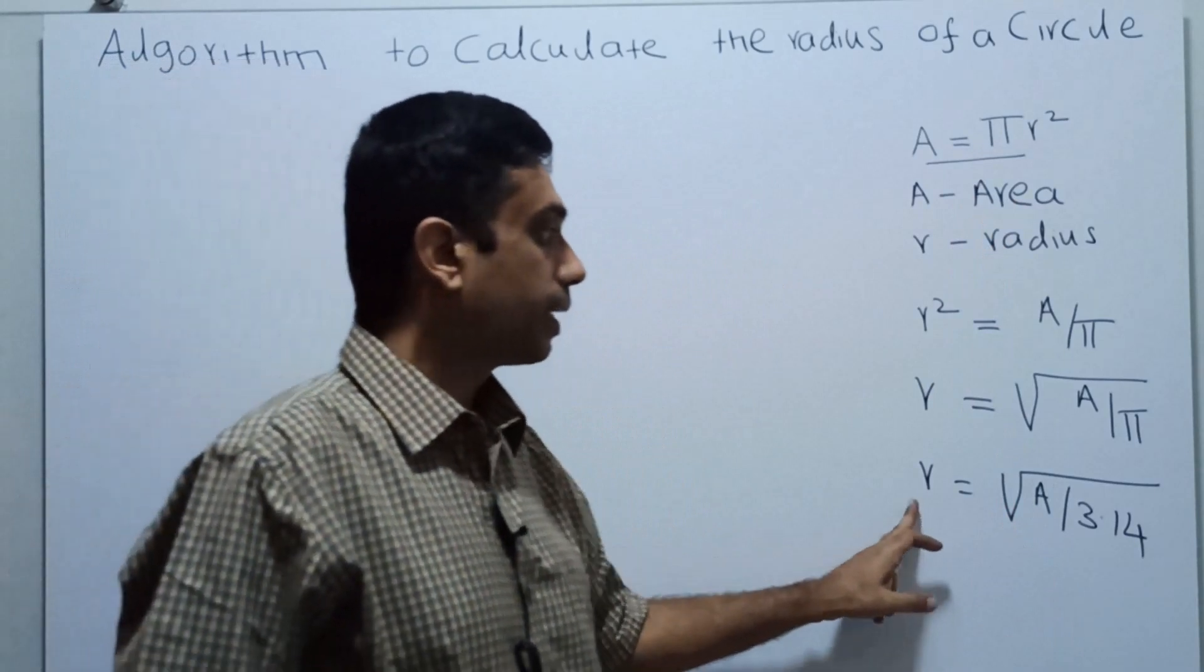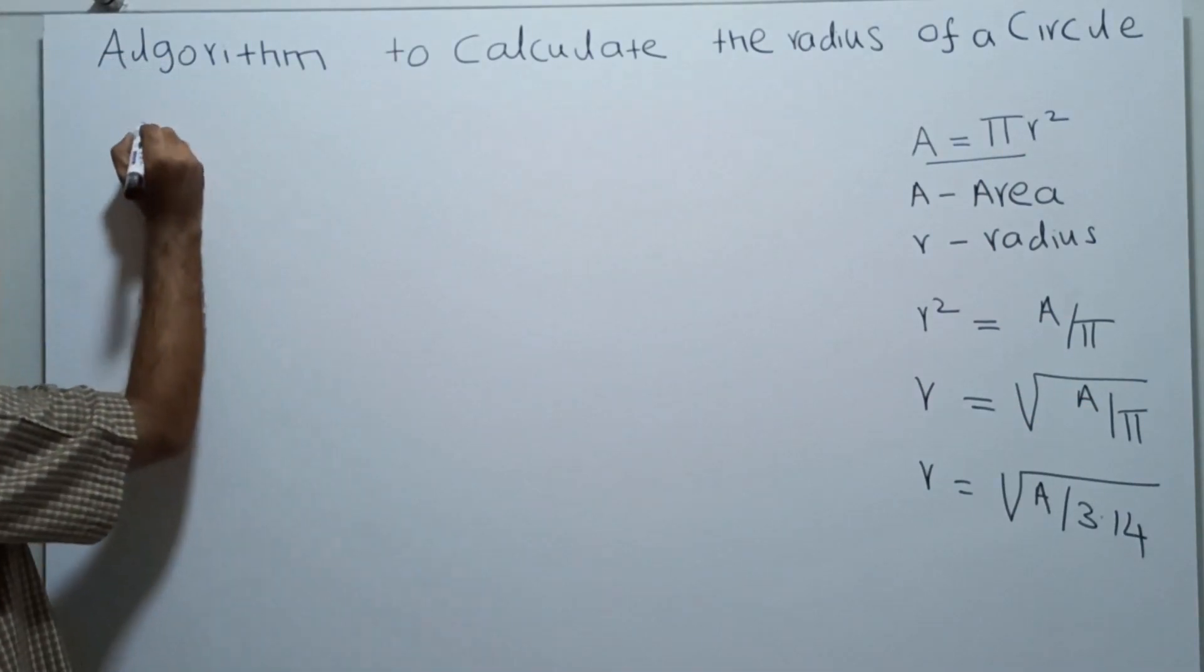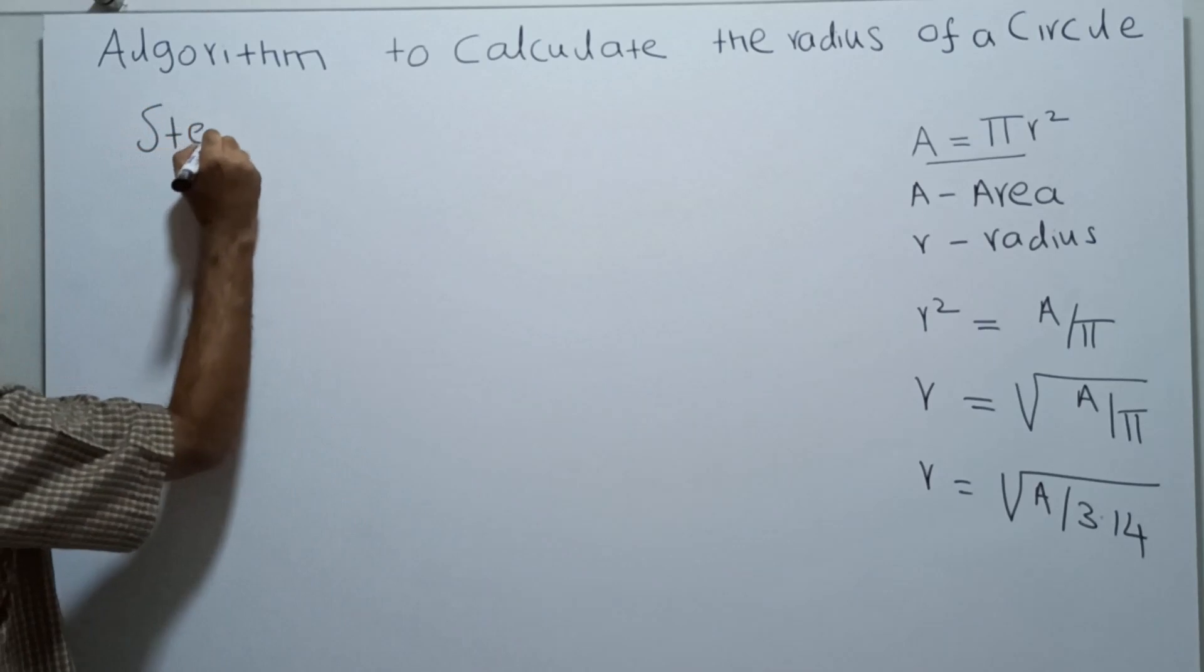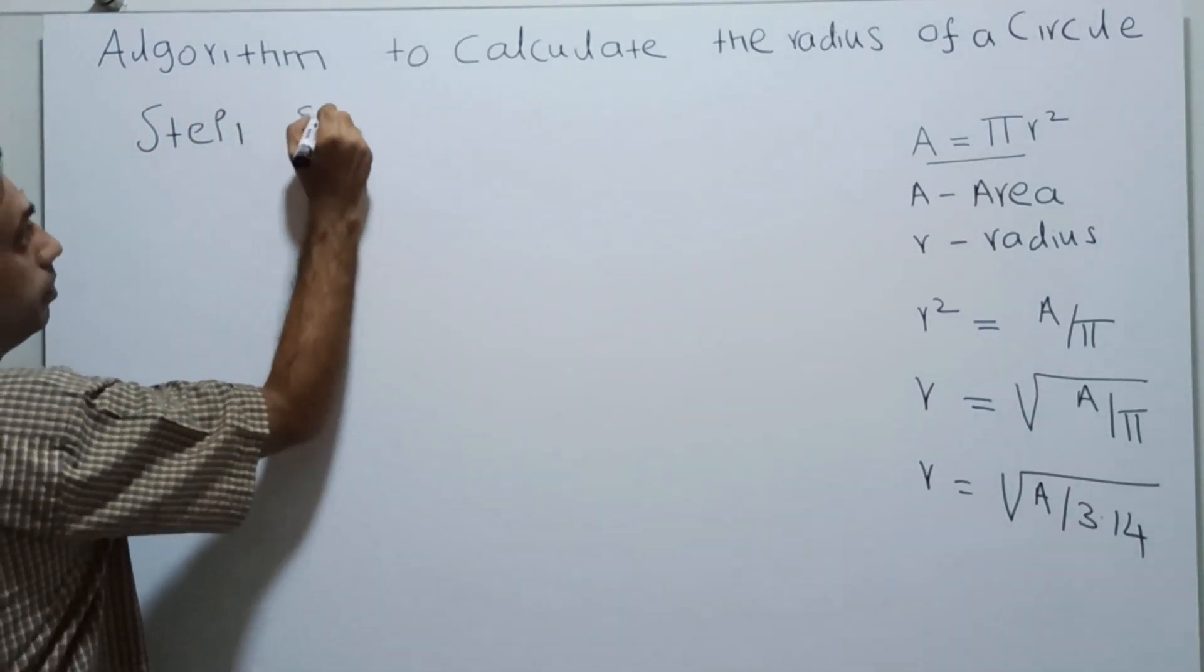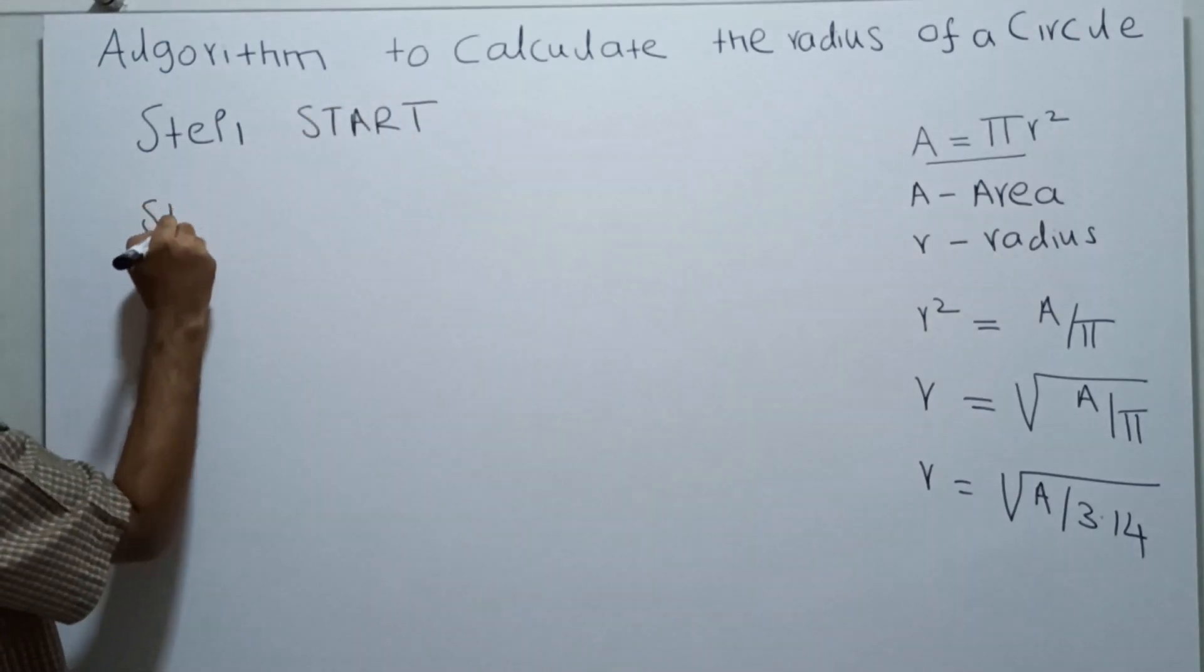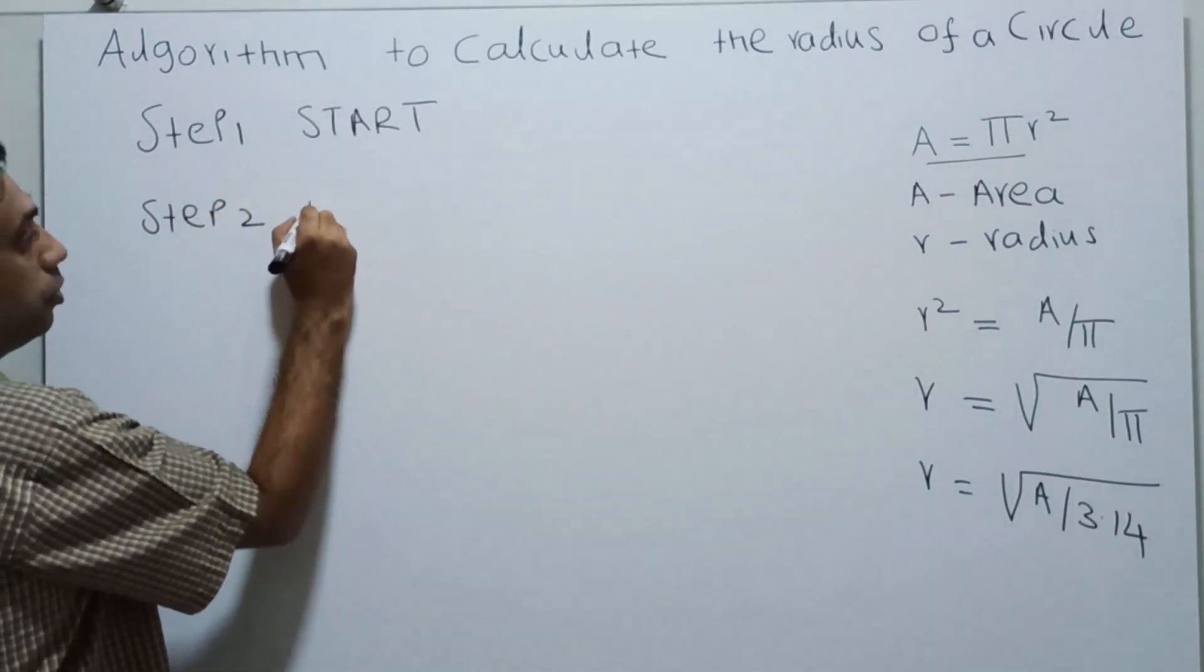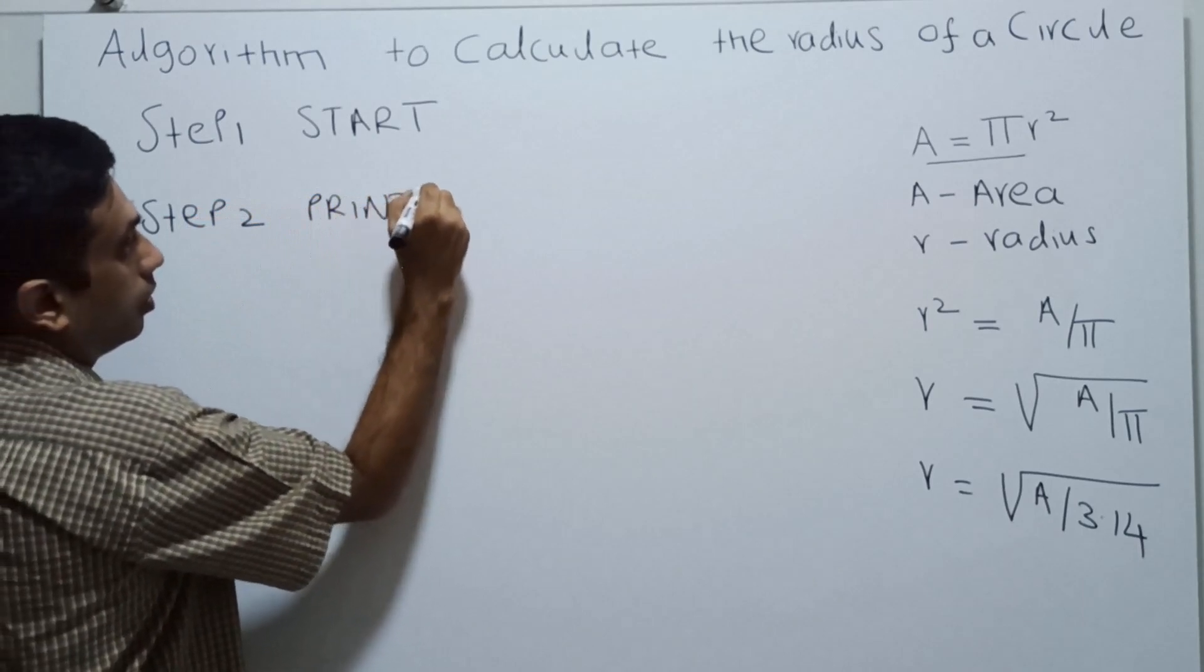Let's directly go to the algorithm. Step 1: START. This is the logical start of the algorithm. Step 2: PRINT. Ask the user to enter the area. Print 'enter the value for area.'